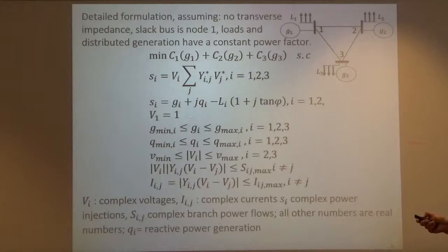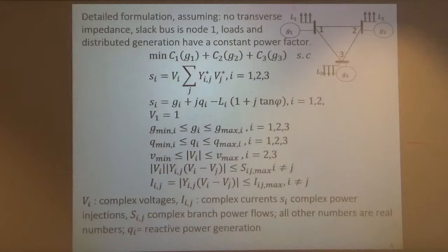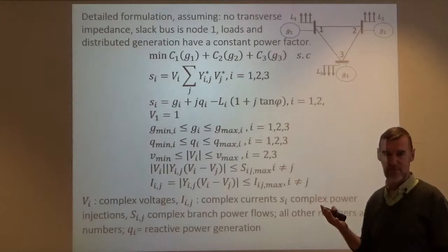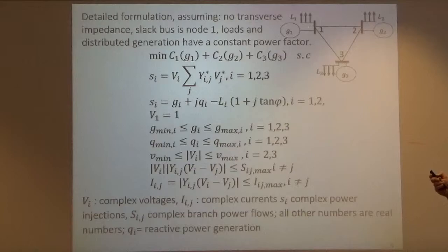V1 equals one. This comes from the slack bus hypothesis. The slack bus is the one imposing the voltage. The magnitude is one — in per unit the nominal voltage of the slack bus — and the phase angle is zero, which is just a convention. You always measure a phase angle with respect to some reference. So here I'm simply setting the zero reference of phase angle as that of the slack bus. It's the complex number one with zero imaginary part.